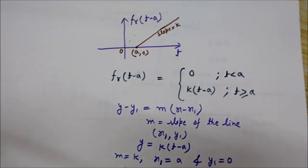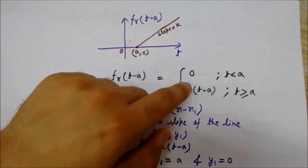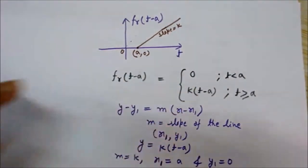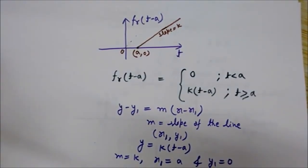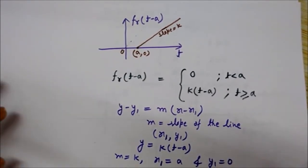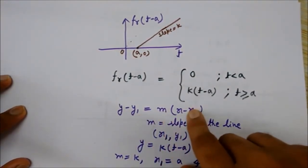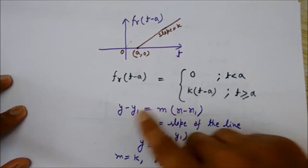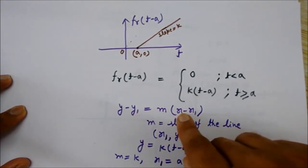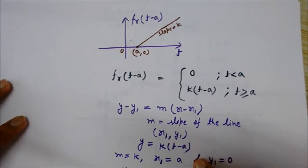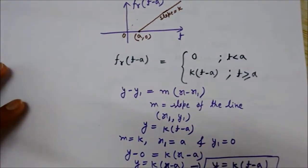We can also derive the above equation by another approach. We know that the equation of a straight line passing through any point (x1, y1) and having slope m is given as y minus y1 equals m times (x minus x1), where x1 and y1 are the coordinates through which the line passes and m is the slope.